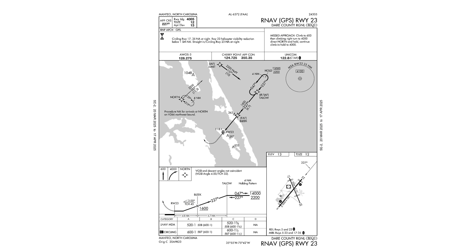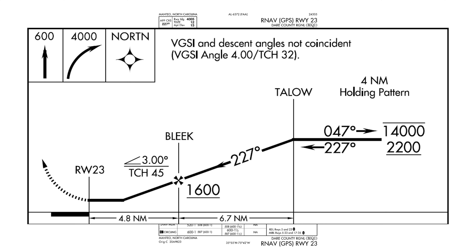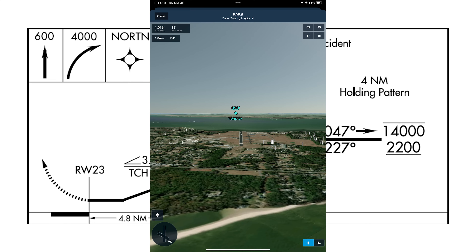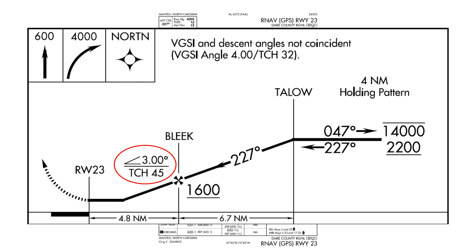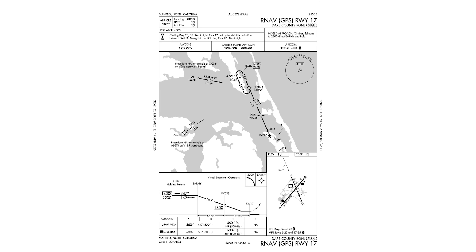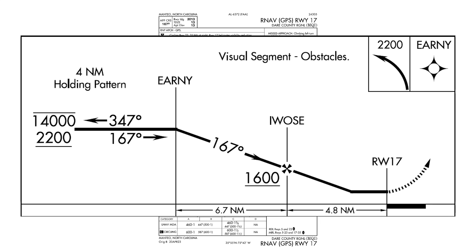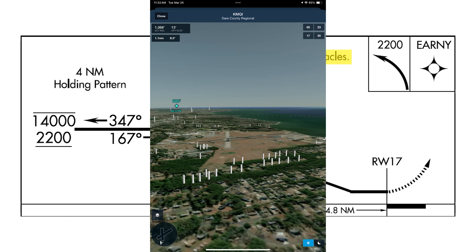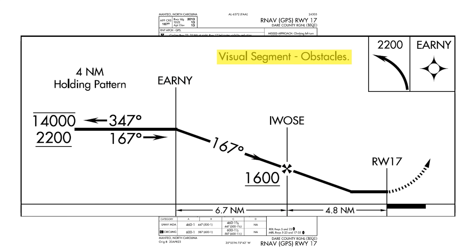The approach to the opposite runway 23 doesn't have that STIPPLE, meaning there are obstacles that penetrate the 34-to-1 slope. Looking at the 3D view, we see a few charted obstacles in the approach area. The approach plate still shows a vertical descent angle of 3 degrees, but the absence of a STIPPLE means those obstacles penetrate the slope. Finally, there's the approach to runway 17. There's no STIPPLE here either, and there's also no published vertical descent angle. Instead, there's a note saying VISUAL SEGMENT OBSTACLES, meaning you may need to adjust your descent angle from the MDA to the runway to negotiate those close-in obstacles — a very important briefing item.